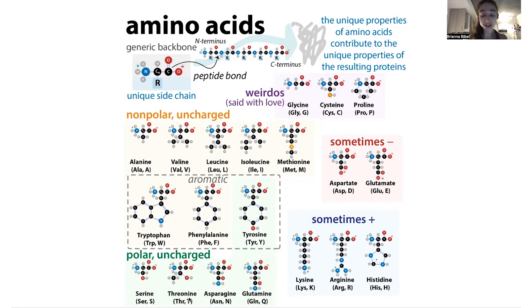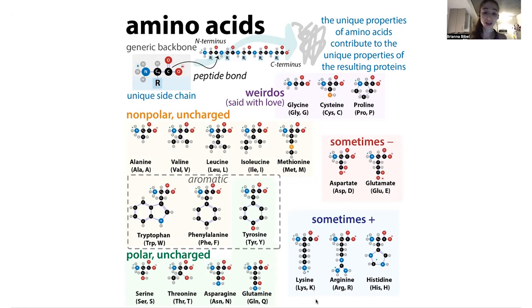For tyrosine and threonine: threonine occurs more commonly in proteins, so threonine gets T and tyrosine gets Y — because Y is like the second letter of tyrosine. For lysine and leucine: leucine gets L, and lysine gets K. K might seem weird, but Y was taken by tyrosine, K is close to L, and nothing else was using K. Methionine is using M, so K it is for lysine.